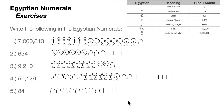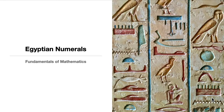That's how we write Hindu-Arabic numerals in Egyptian numerals. You can also do the reverse — if given Egyptian numerals, convert them to Hindu-Arabic — which is straightforward as long as you have the symbol table at hand. That's it for Egyptian numerals under Fundamentals of Mathematics. Thank you for watching — don't forget to like and subscribe!